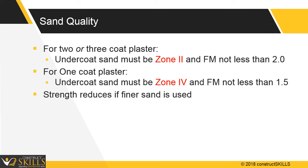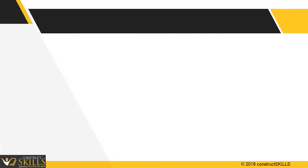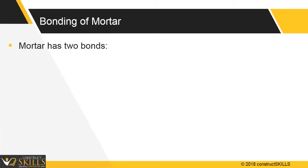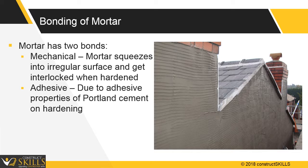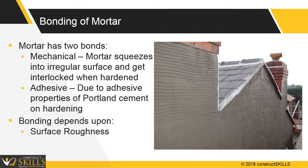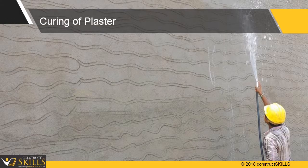There are two types of plaster bonding. Mechanical bonding occurs when mortar squeezes into an irregular surface and interlocks when hardened. Adhesive bonding is due to the adhesive properties of Portland cement on hardening. Bonding mainly depends upon the roughness of the surface on which the plaster is to be applied and the quality of the mixed material.